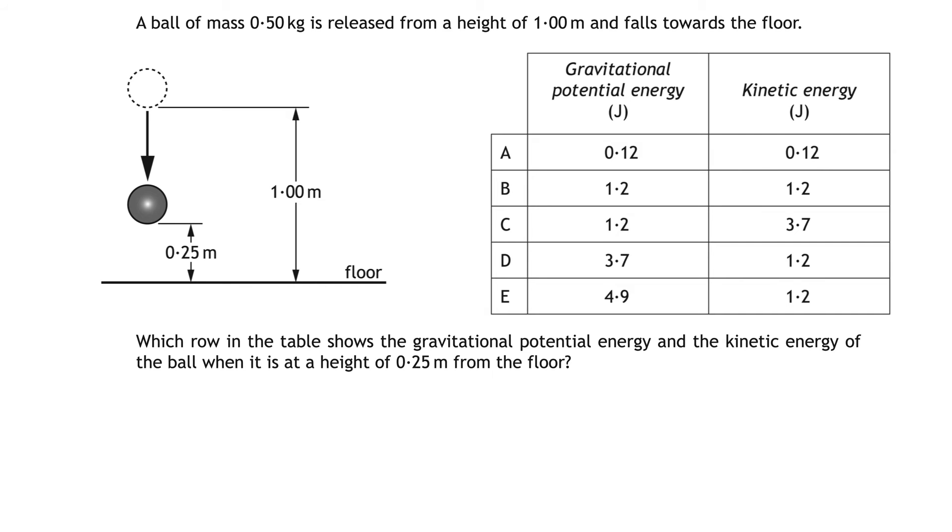To calculate the gravitational potential energy of the ball at this point 0.25 meters above the floor we use the equation E_p is equal to mgh. Just remember that mass m should be in kilograms and height h should be in meters. The value of g the gravitational field strength on earth is given in the data sheet at the start of the exam. That gives us 0.50 times 9.8 times 0.25 which is 1.225 joules or to two significant figures 1.2. So already we can rule out three of the answers.